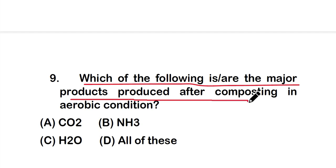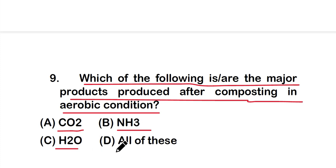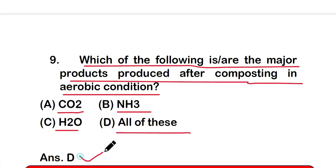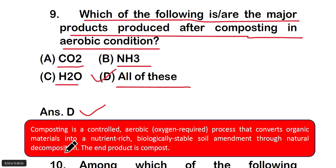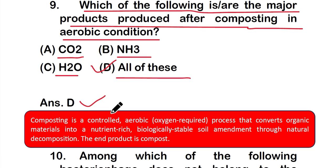Question nine: which of the following is or are the major products produced after composting in aerobic conditions? Options: CO2, NH3, H2O, or all of these. The right answer is option D — all of these. Carbon dioxide, ammonia, and water are the major products produced after aerobic composting. Composting is a controlled aerobic process that converts organic material into a nutrient-rich, biologically stable soil amendment through natural decomposition.